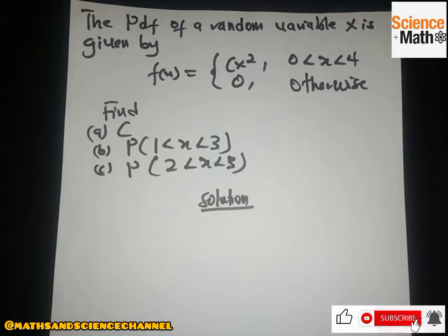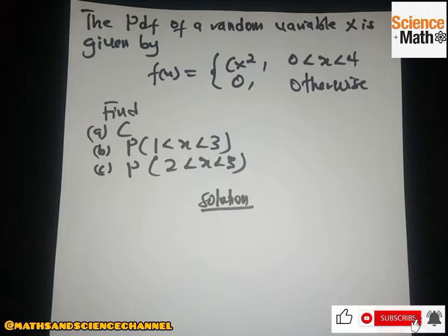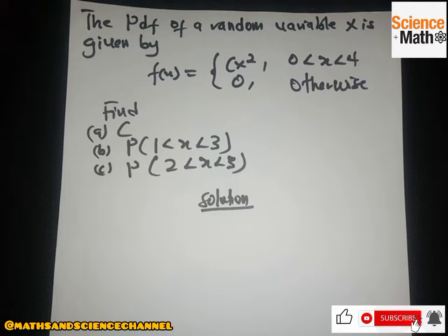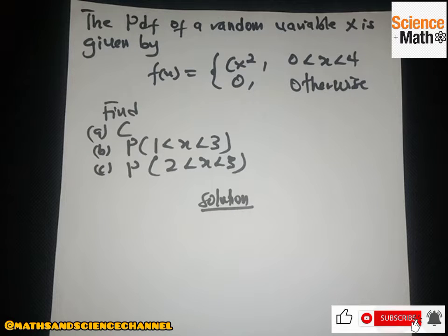Hello everyone, welcome once again to my channel. In this section we have a question on continuous variables — this is the first part. The PDF of a random variable s is given by f(s) = cs² for 0 < s < 4, and 0 otherwise. The questions ask us to find c, then find the probability that 1 < s < 3, and then the probability that 2 < s < 3.